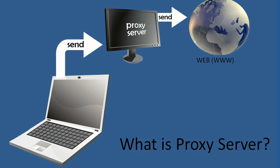Proxy servers can be used for HTTP web traffic, SMTP for email, FTP, and more. They can also be configured at the socket level to cover all your internet traffic, including peer-to-peer file transfers. Today we're focusing on proxy server basics — how to search the web anonymously — rather than going deep into socket-level configuration.